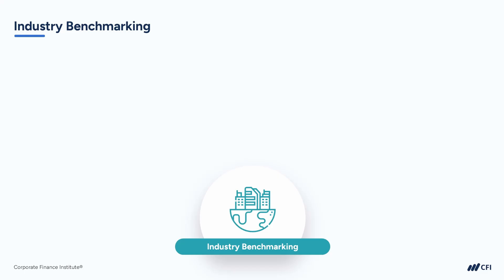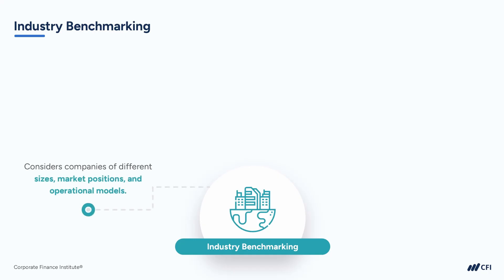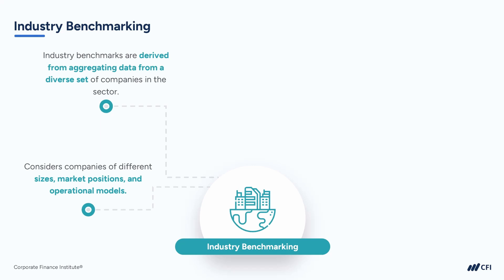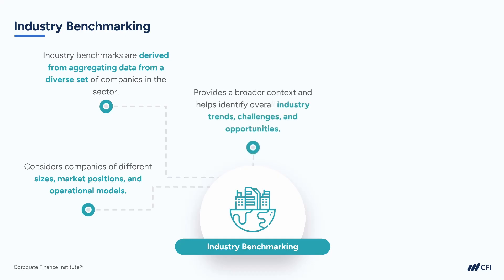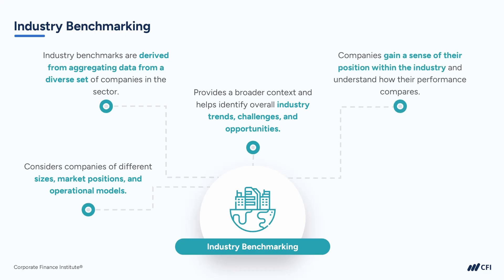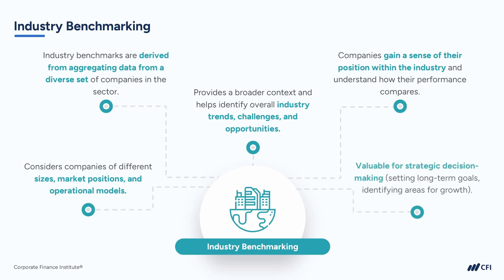Benchmarking against the industry at large involves comparing financial ratios and performance metrics with a broader range of companies operating within the same industry. This approach considers companies of different sizes, market positions, and operational models. The industry benchmarks are derived from aggregating data from a diverse set of companies in that sector. This provides a broader context and helps identify overall industry trends, challenges, and opportunities. It also enables companies to understand their relative position within the industry and inform strategic decision making, such as setting long-term goals and identifying potential areas for growth or diversification.